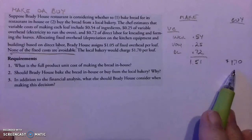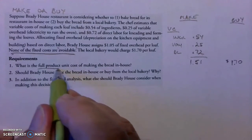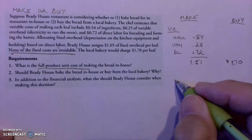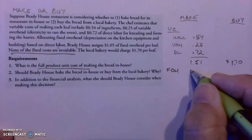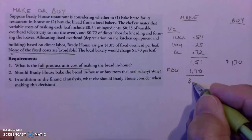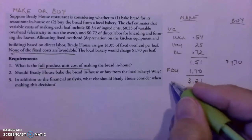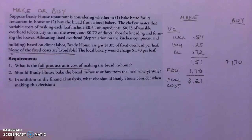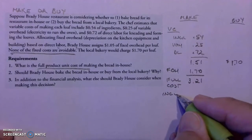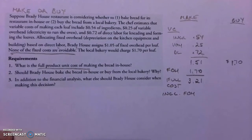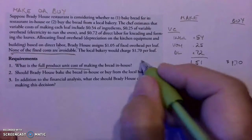Now let's look at the questions. What's the full product cost of making the bread in-house? Full cost includes fixed overhead, which is $1.05. So the full product unit cost would be $1.51 plus $1.05, giving us $2.56 — though with the numbers presented it comes to $3.21. This is the full cost, and it includes fixed overhead.